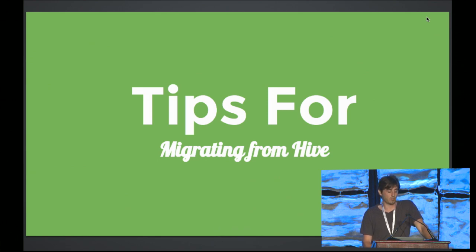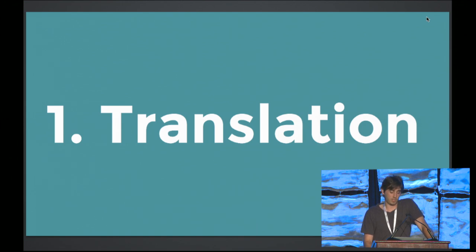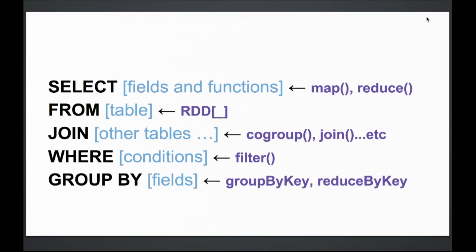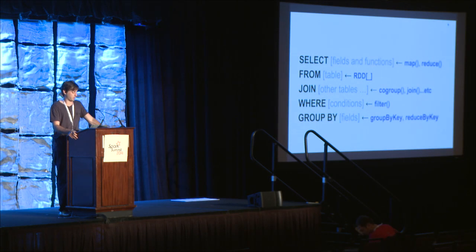Some best practices for migrating from Hive: you have to get used to translating from SQL to the Spark Scala APIs. In SQL, selecting fields is equivalent to a map in Spark. Aggregations like sum or average are typically a reduce. The FROM clause becomes an RDD — think of it as a distributed list. For joins, Spark has a method called co-group, which is the join primitive all other join methods are built on — inner join, left outer join, etc. A WHERE clause becomes a filter, and GROUP BY becomes either a groupByKey or a reduceByKey.